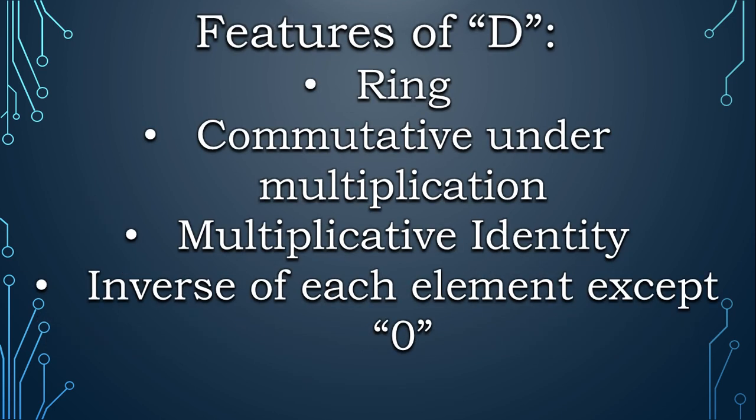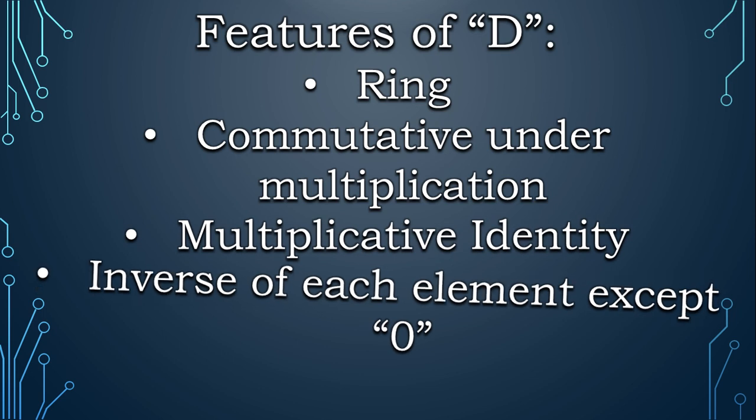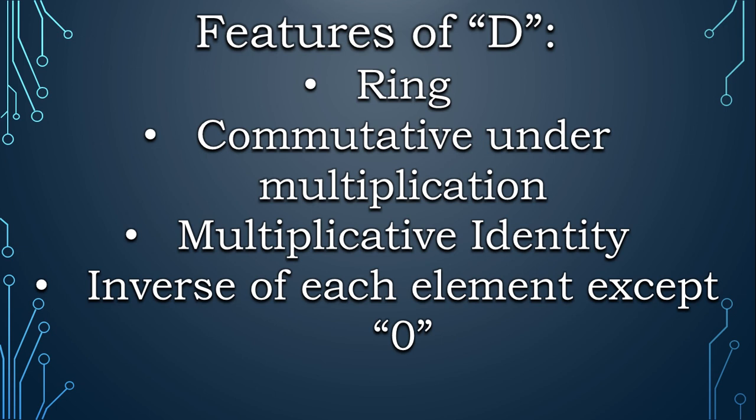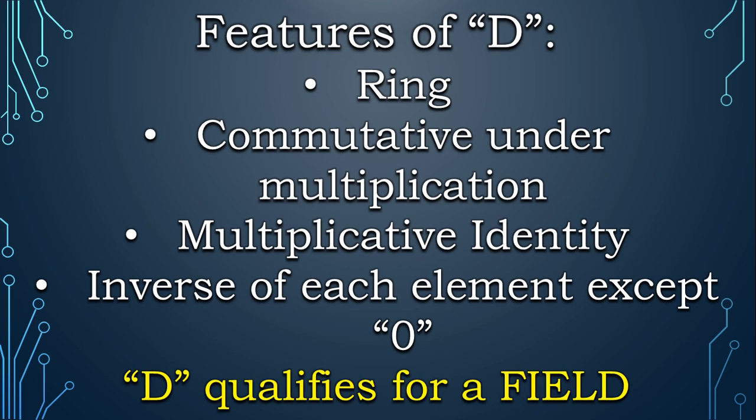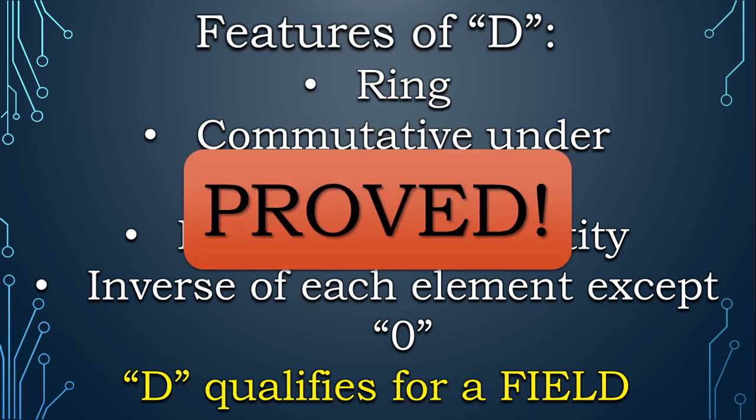So at last we look into the features of D one more time. D is a ring, D is commutative under multiplication, D has multiplicative identity, and now D has multiplicative inverses of each of its elements except zero. Sounds about right. So my friends, D has finally qualified to become a field, hence proved.